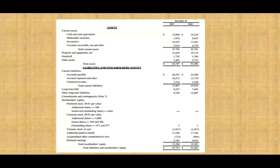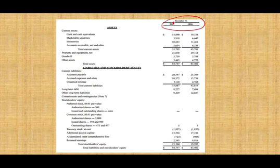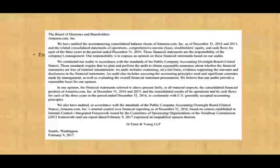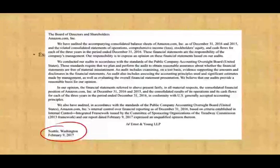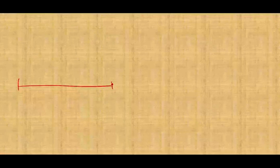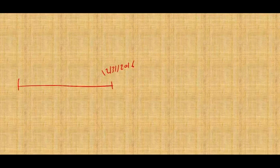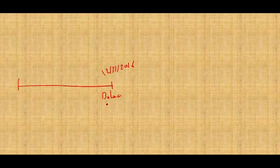We're going to be looking at Amazon as an example. Amazon's year-end is December 31st, and we're looking at December 31st, 2016. This is their balance sheet date. The audit report is signed February 9th, 2017. As far as Amazon is concerned, December 31st, 2016 is the balance sheet date — we call this the client balance sheet date.